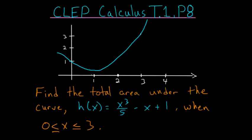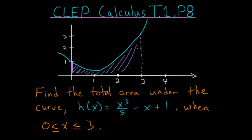Find the total area under the curve h(x) = x³/5 − x + 1 when x is between 0 and 3. In other words, we need to find the area under the curve from x = 0 all the way to x = 3 — the area of this region here. To do that, we can just take an integral of this function from 0 to 3.